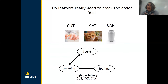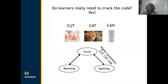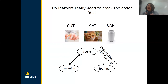So learners do need to crack this code. And the way that we do that is by helping learners to understand the relationship between spelling and sound. Now we have cut, cat, and can — these words look similar, and they also sound similar. So this is a systematic learning task, and it's best if we can convey this explicitly.